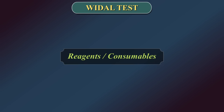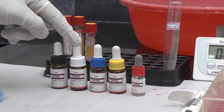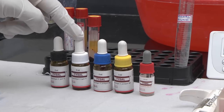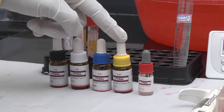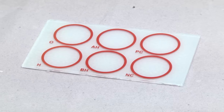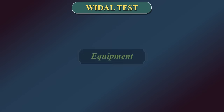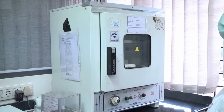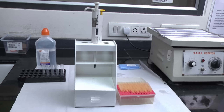Reagents and consumables required: Salmonella typhi O antigen suspension, Salmonella typhi H antigen suspension, Salmonella paratyphi AH antigen suspension, Salmonella paratyphi BH antigen suspension, polyspecific positive control, glass slide with 6 reaction circles, applicator sticks. Equipment includes an incubator, timer, 0.1 mL and 1 mL serological pipettes and droppers.